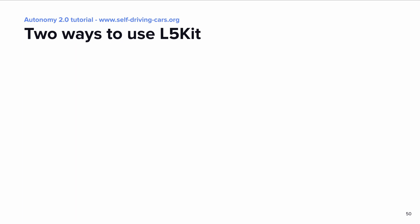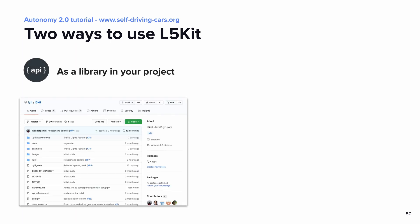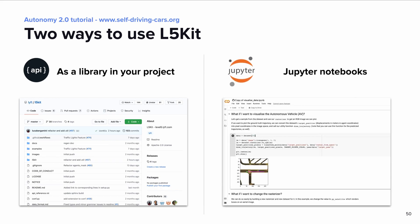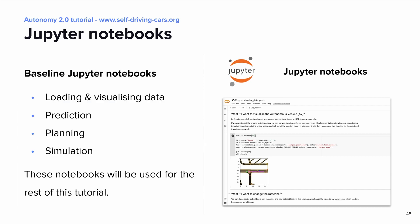There are two ways to use L5Kit in your project. The first one is to use it as a library, so all you have to do is import L5Kit and use its API directly in your code. The second way is to use Jupyter Notebooks. We already provide notebook implementations of some baselines that you can use and adapt according to your needs, or you can use the notebooks to inspect scenes and use our interactive visualization engine. We implemented notebooks showing how to load and visualize data, how to do prediction, planning and simulation. Those notebooks are the ones that will be used during the rest of this tutorial.